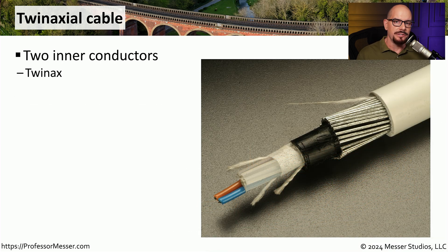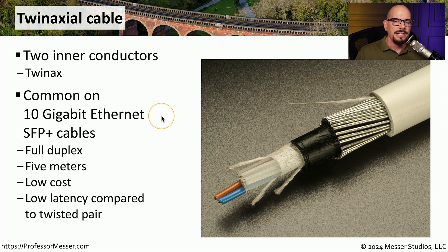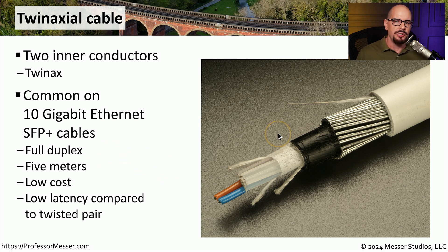If we put two conductors inside of this cable type, then we have a twin-axial cable, often referred to simply as twinax. Twinax is commonly associated with 10 gigabit per second ethernet and is often installed as part of an SFP+ interface. This allows for full duplex communication over a single cable, but limits the signal distance to about five meters. It has a relatively low cost compared to fiber optics, and often much lower latency compared to a twisted pair connection.